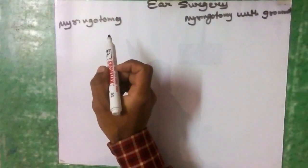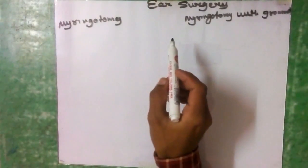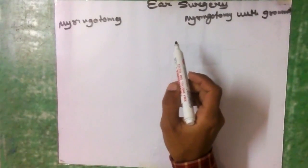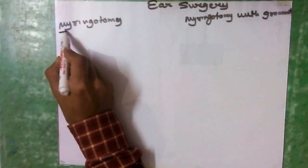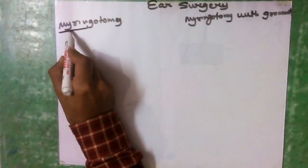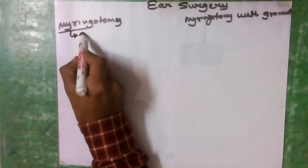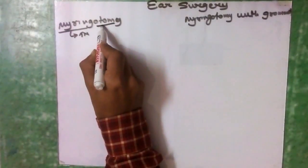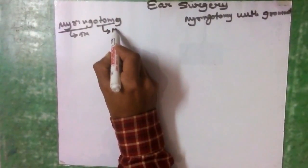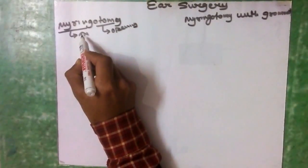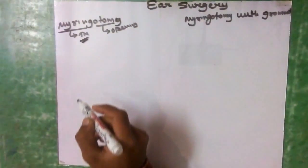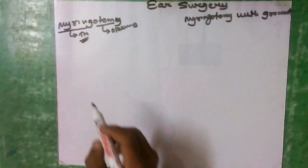Regarding ear surgery, we will start with myringotomy, which is the most widely performed surgery in the ear. Myringotomy: 'myringo' means tympanic membrane, and '-otomy' means creating an opening. So myringotomy means creating an opening in the tympanic membrane.